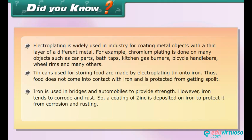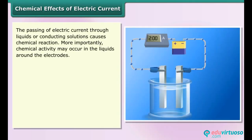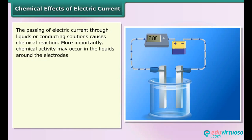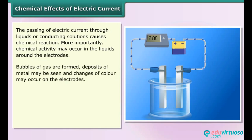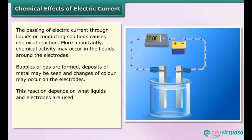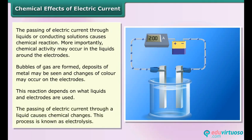Iron is used in bridges and automobiles to provide strength. However, iron tends to corrode and rust, so a coating of zinc is deposited on iron to protect it from corrosion and rusting. The passing of electric current through liquids or conducting solutions causes chemical reactions. Chemical activity may occur in the liquids around the electrodes — bubbles of gas are formed, deposits of metal may be seen, and changes of color may occur on the electrodes.